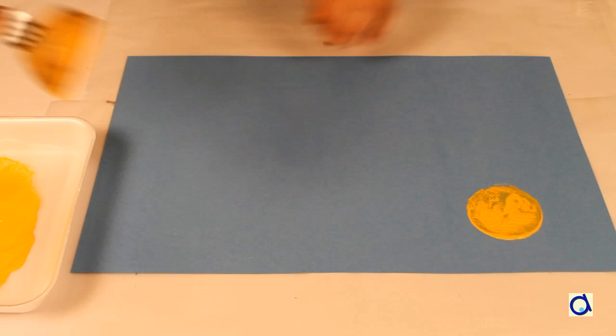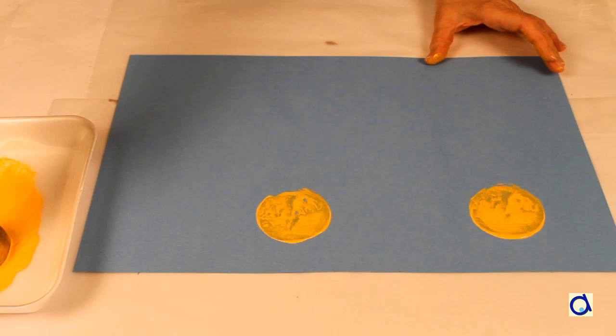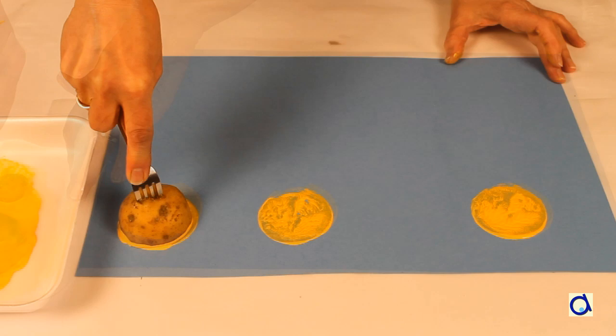Stick a fork in the half potato and dip it in the yellow paint. Make potato impressions. Do not put them right at the edge of the sheet to leave some room to draw the legs later on.